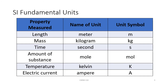The unit for length is the meter and the symbol is lowercase m. The SI fundamental unit for mass is actually the kilogram and the unit is kg. Time is the second, lowercase s. Amount of substance is the mole and the symbol is mol. Temperature is measured in Kelvin and it's a capital K. The SI unit for electric current is the ampere, or amp for short, and its symbol is a capital letter A.